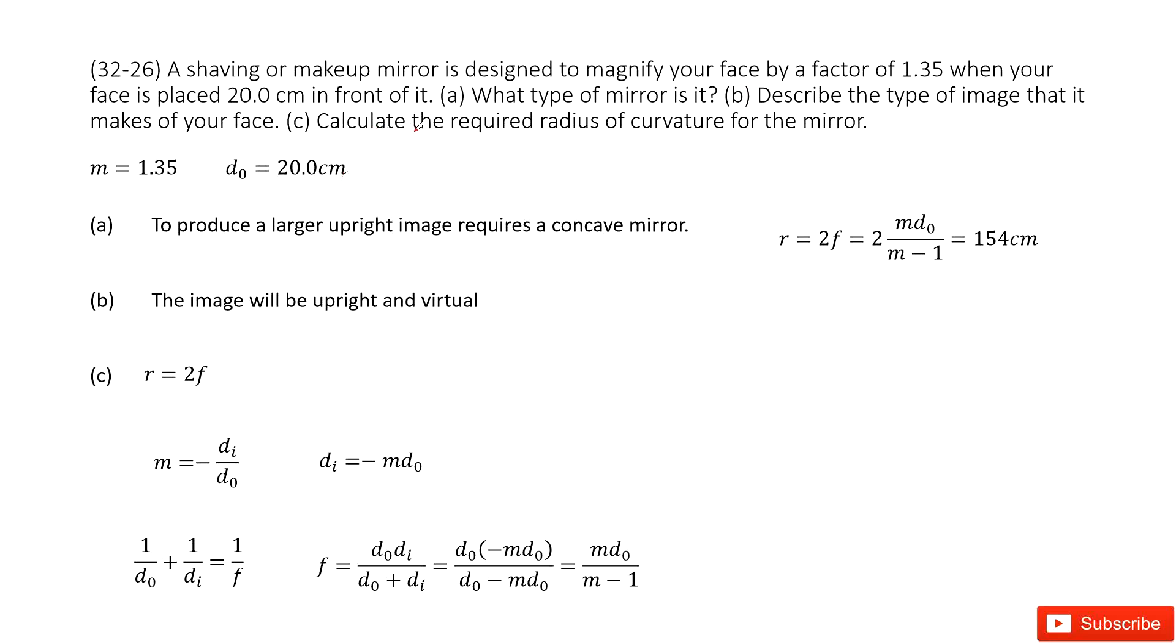Part (c): Calculate the required radius of the mirror. The radius of the mirror should be equal to 2 times the focal length. The focal length can be connected with the magnification m and object distance.